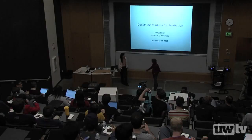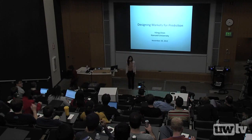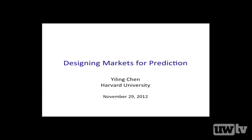It's a real treat for me to introduce Yiling Chen, who is a professor at Harvard. She is one of the young stars who works at the boundary of game theory, economics, and computer science. She will tell us about prediction markets. Thanks a lot. I'm going to talk about how we can design markets for the purpose of getting probabilistic information from a diverse group of people and eventually to make an informed prediction.